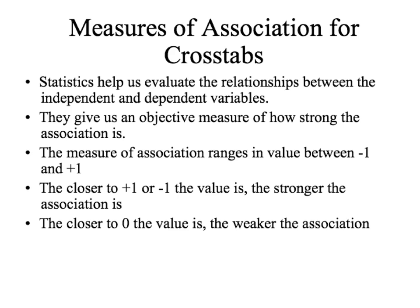Measures of association have a range between negative 1 and positive 1. The closer to positive 1 or negative 1 the value is, the stronger the association or relationship. And the closer to 0 the value is, the weaker the association or relationship.